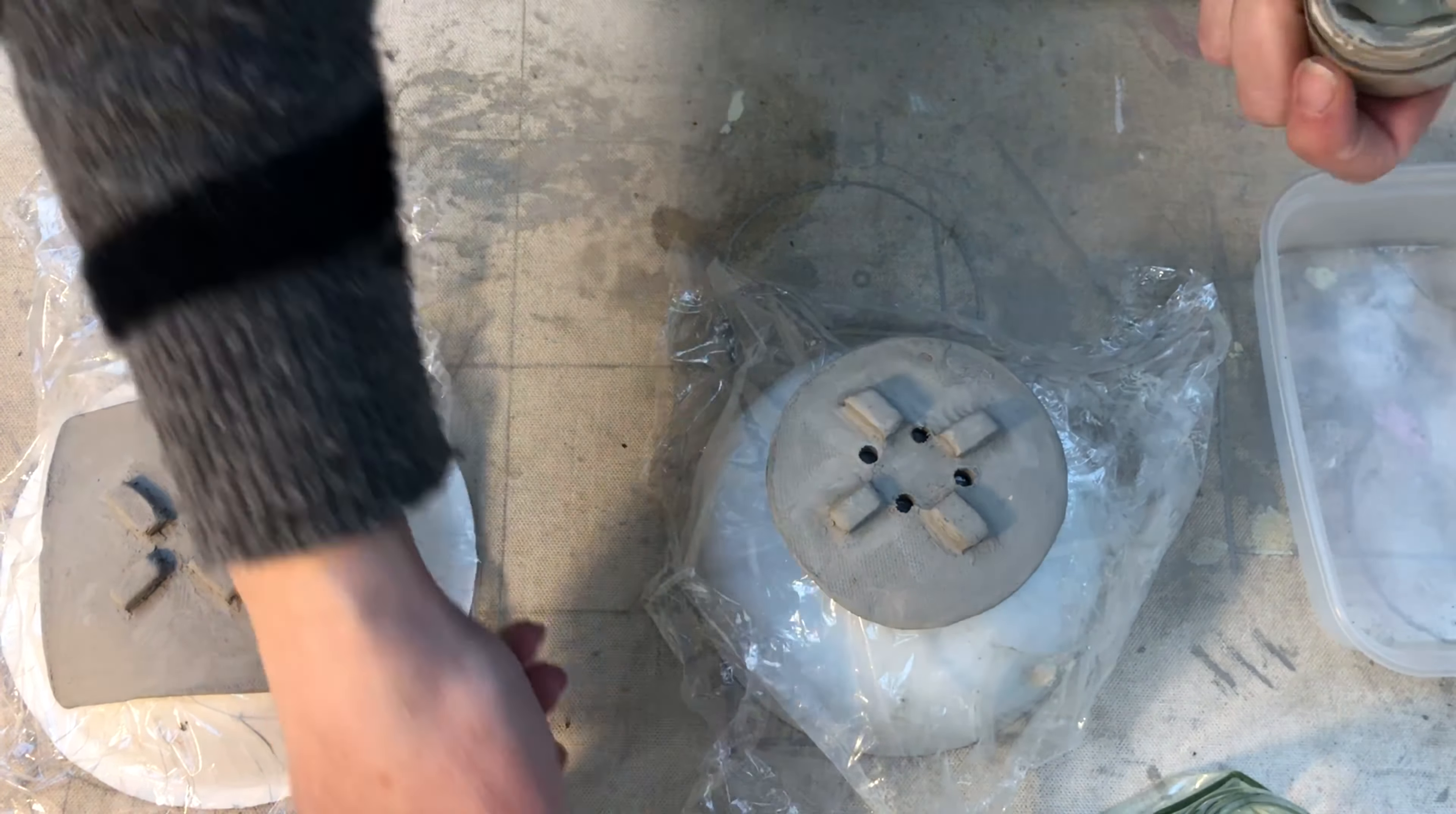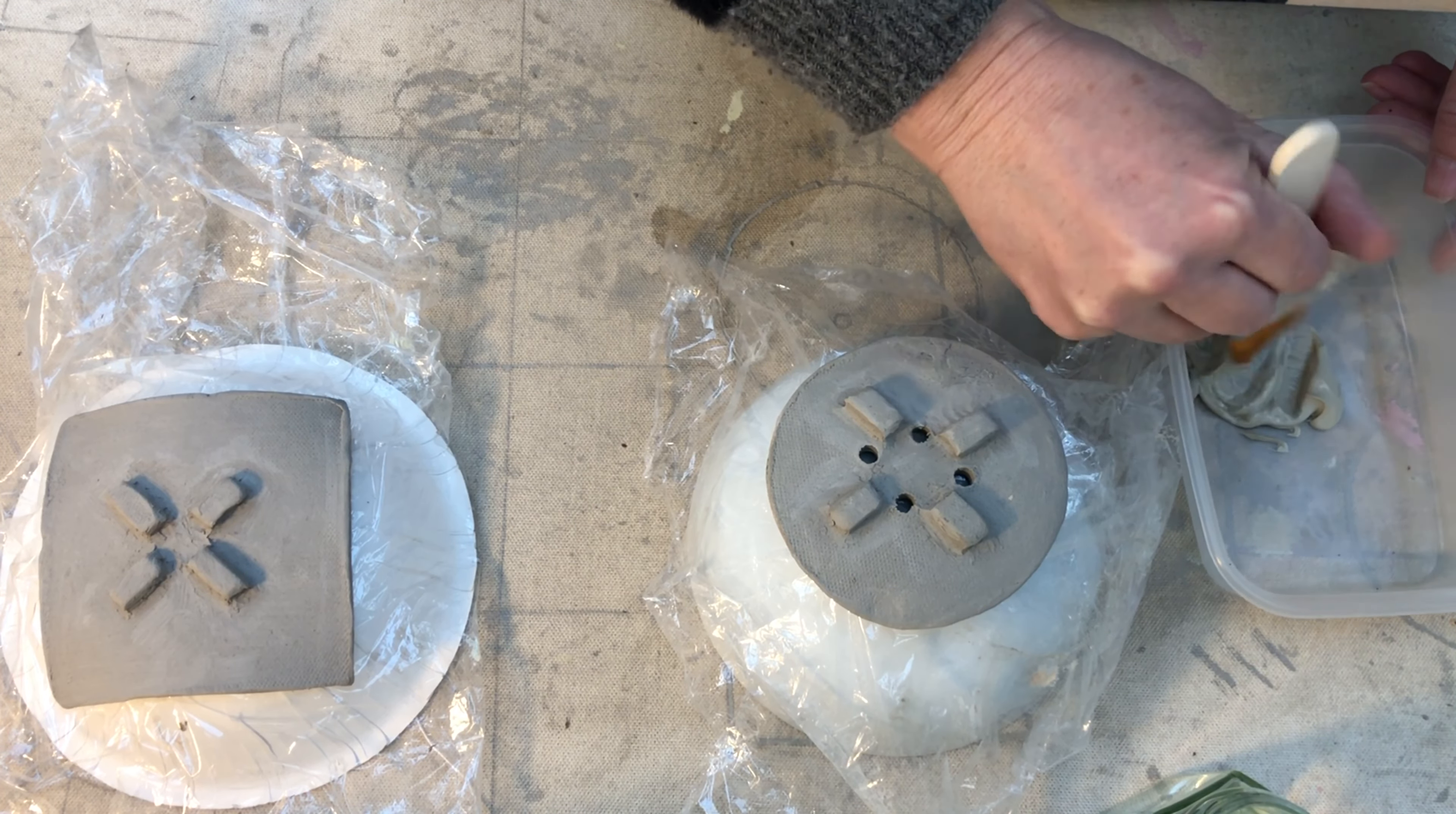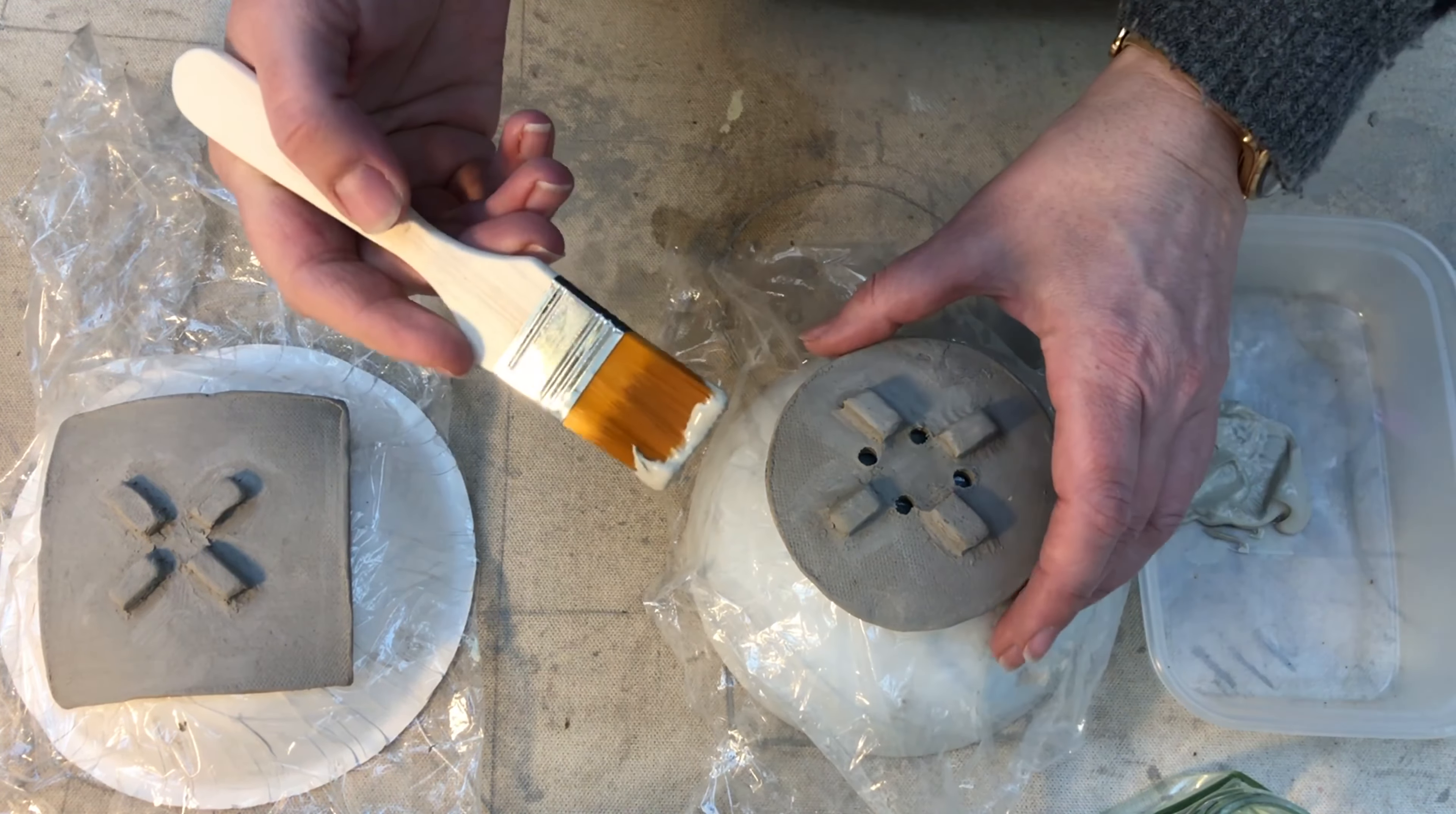You'll find some jars with colored slips in your box. We've given you all the primary colors. They work well if you dilute them. And then you use them like paint.